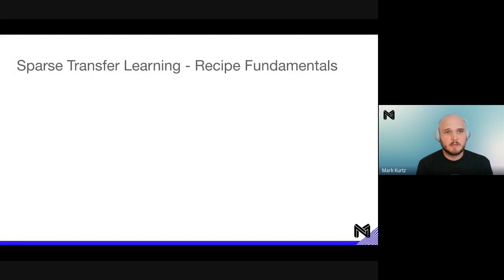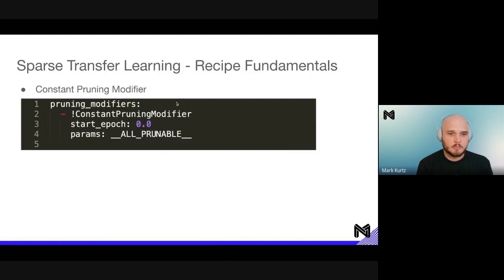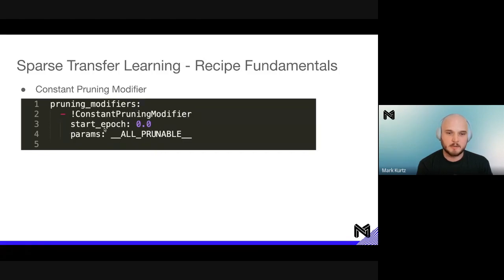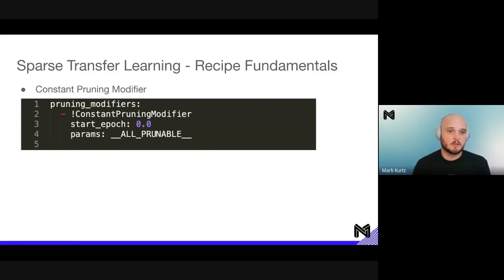Looking through the recipe fundamentals: the core fundamental for sparse transfer is something called a constant pruning modifier. To create a SparseTransfer recipe, we create a group of pruning modifiers in a YAML file using a constant pruning modifier. This says: start at epoch zero, target all prunable params, and just preserve the sparsity masks on top of those. No matter the training integration you have, it will make sure those sparsity masks stay intact — that's what's happening under the hood in the training run we just kicked off.